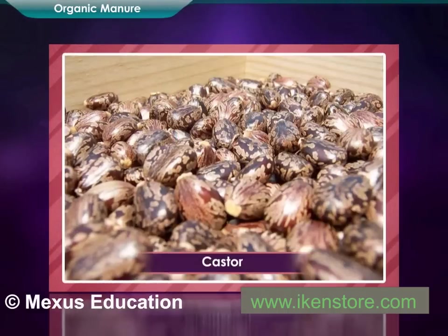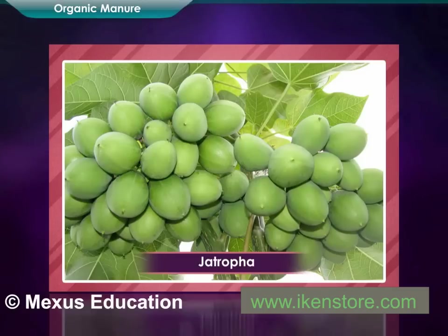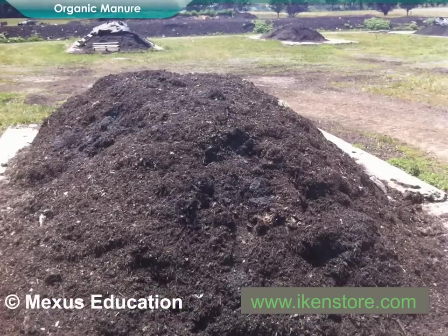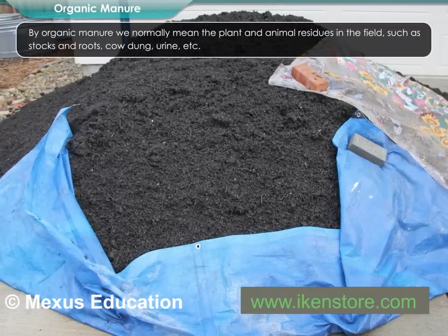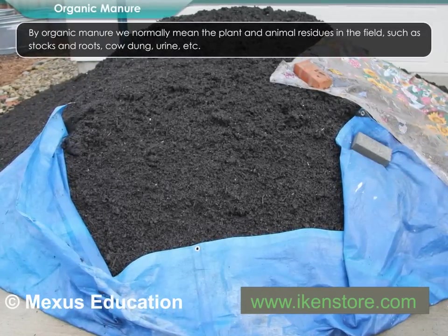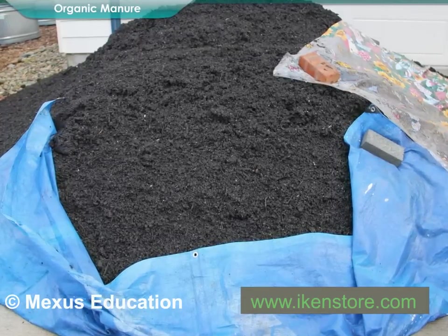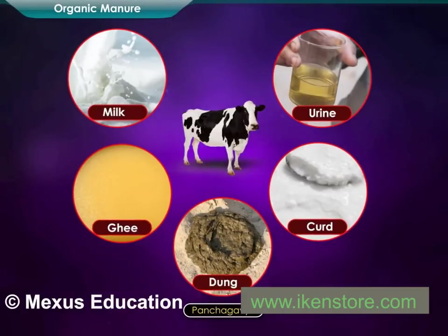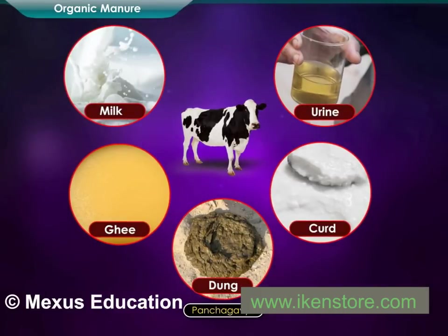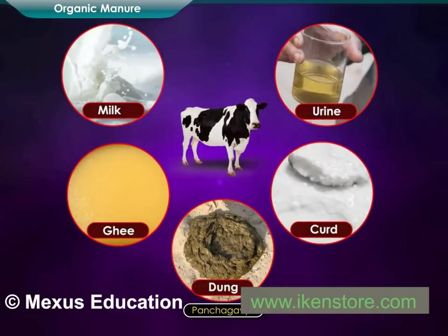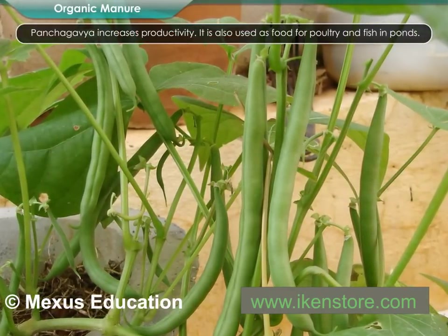Powders of groundnut, castor, coconut, neem, and jatropha seed are examples of concentrated organic manures. Animal excreta, compost, etc. are examples of macro organic manure. Organic manure normally refers to plant and animal residues in the field such as stalks, roots, and cow dung and urine. Pancha Gavya, a natural manure, is made from milk, curd, ghee, dung, and urine of cows; coconut water, sugarcane juice, and banana paste are also added. Pancha Gavya increases productivity and is also used as food for poultry and fish in ponds.